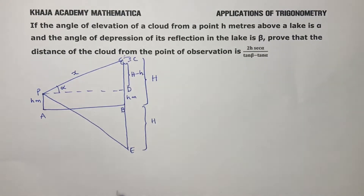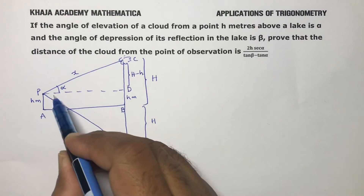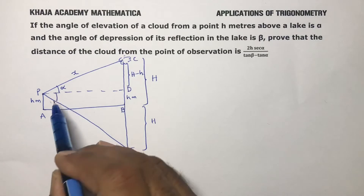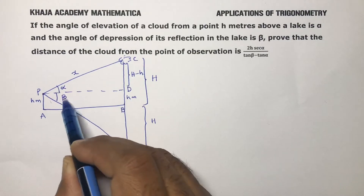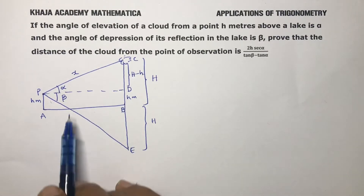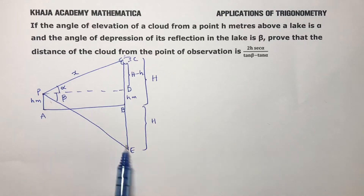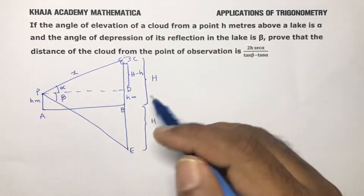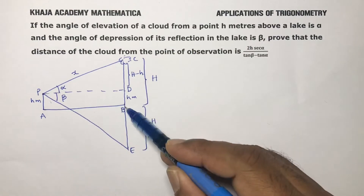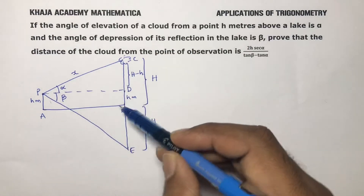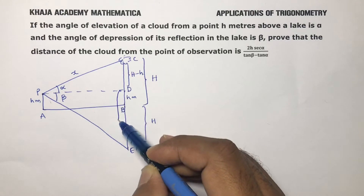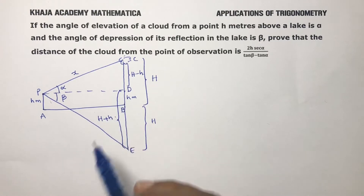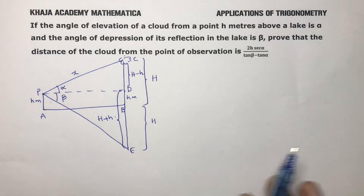The angle of depression from the horizontal surface is beta. DE equals capital H plus small h, since this part is small h and the BD part is also small h, giving DE as capital H plus small h.